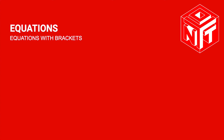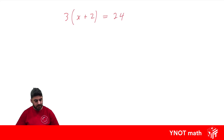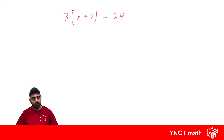Equations with brackets. Let's jump straight into it. Let's have a look at 3 outside of x plus 2 equals 24. We've already seen in algebra that when we have something outside a bracket, it means multiplication. It's really important that the thing outside the bracket needs to be multiplied by everything inside the bracket. So let's go ahead and do that first.